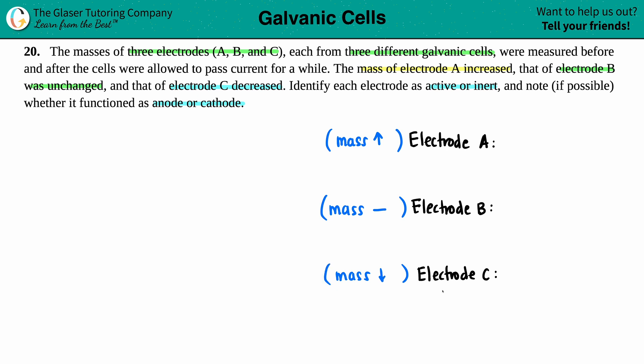Now identify each as either active or inert. An active electrode or an inert electrode is basically the difference between what's going on with the masses. If your masses are changing, you are an active electrode and you're either the cathode or the anode in your galvanic cell. Inert electrodes are when your masses are staying the same, so the mass is constant.